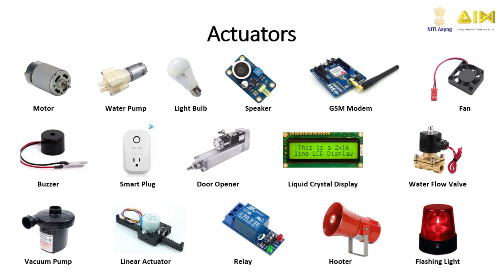These devices are called actuators. Actuators convert the electrical input supplied to them into rotary motion, linear motion, vibratory motion, or bending motion. They may also convert the input electrical signal into visible display, light, or audible sound. Actuators may also switch on or off other appliances.